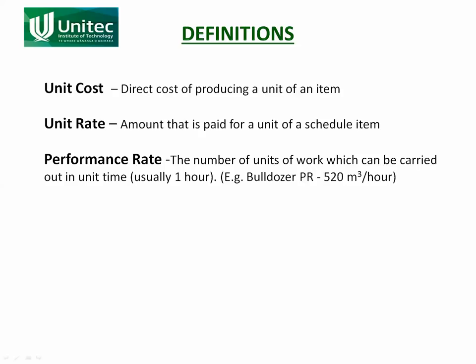A unit rate is the amount that is paid for a unit of a scheduled item. So while it might cost you a hundred dollars to dig a cubic meter of soil, you would charge the client maybe a hundred and ten or a hundred and twenty dollars to cover your overheads and your profit. That is what the unit rate is — the amount paid for the unit of the scheduled item.